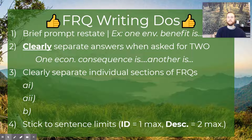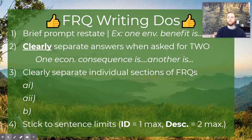Now we're on to the do's — the things you should do when writing an FRQ. You always want to start with a brief prompt restate. Do not rewrite the entire prompt, but just phrase it so you signal to your reader where you're starting. You might say 'one environmental benefit is' and then get into it. You don't need to say 'one environmental benefit of humans preserving natural ecosystems for national parks is.' It's too much — you don't have the time and it's not necessary.